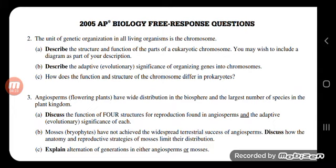Describe the adaptive evolutionary significance of organizing genes into chromosomes. This is a tough question worth three points. Point number one is the ability for genetic variation. When chromosomes are inside the nucleus, they have the ability to do crossing over. With crossing over, we increase genetic variation. When chromosomes are close to each other, they also have independent assortment.